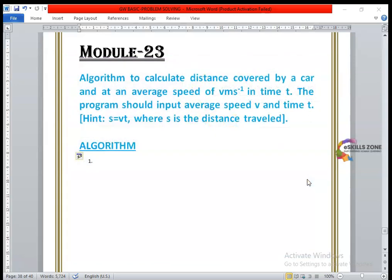Hello and welcome. Hi viewers. In this video today, we will discuss how to write an algorithm to calculate distance covered by a car at an average speed of V in MS⁻¹ in time T. This is used for velocity, meter per second. So we will call it as velocity.